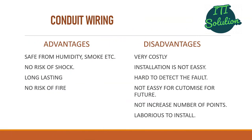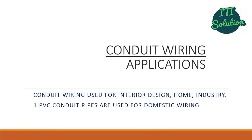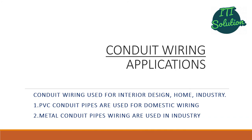Advantages of conduit wiring are safe from humidity, smoke, etc., no risk of shock, long lasting, and no risk of fire. Disadvantages are that it is very costly, installation is not easy, hard to detect faults, not easy to customize for future additions, and laborious to install. For applications, conduit wiring is used for indoor design, homes, and industry. PVC conduit pipes are used for domestic wiring and metal conduit pipes are used in industry.